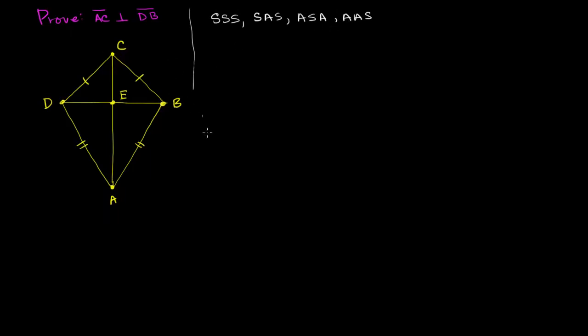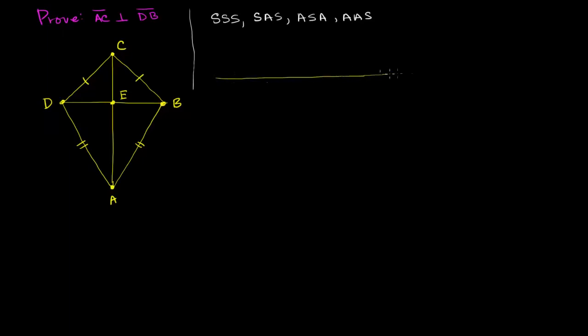I'm also going to do this as a two-column proof. You don't have to, but this is what you normally see in an introductory geometry class. The basic idea is that you make a statement and give the reason for that statement. I'll have two columns — a statement column and a reason column.